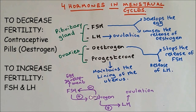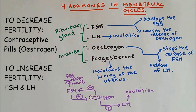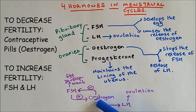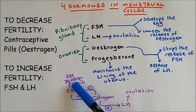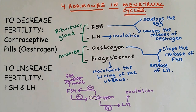The contraceptive pill, which is used to reduce fertility, contains Oestrogen. Because Oestrogen stops the release of FSH, the egg will not get matured, and so the female taking the contraceptive pill will not get pregnant.